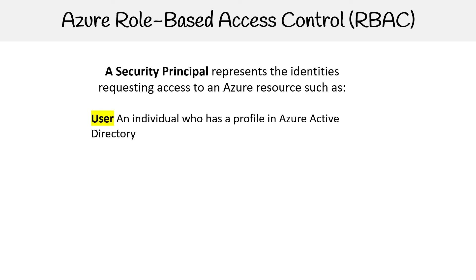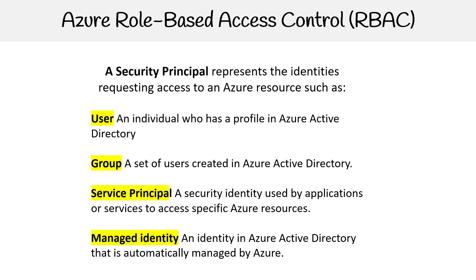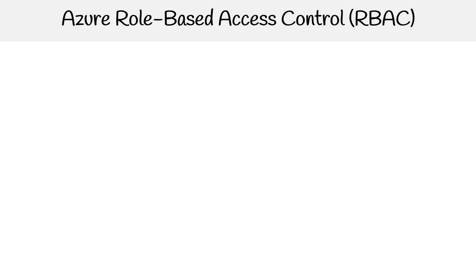That something could be a user in your Azure Active Directory, a group which defines a set of users in your Azure Active Directory, a service principal — a security identity used by applications or services to access specified Azure resources — or a managed identity, an identity in your Azure Active Directory that is automatically managed by Azure. So a service principal is basically an Azure service, and a managed identity is something in your Azure Active Directory.